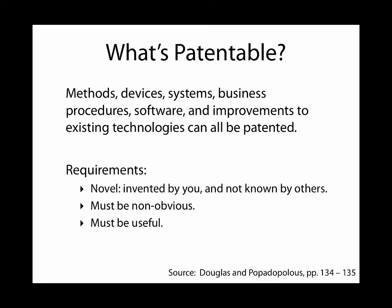The requirements for a utility patent are that it must be novel — you must be the inventor, it must not have existed before, not be known by others, and must have been created by you. It also has to be non-obvious. For example, you couldn't patent the wheel — that's been around for a long time and everybody knows about it. Non-obvious means it can't be a very simple thing, such as the process for filling a glass from a pitcher of water — that process is obvious.